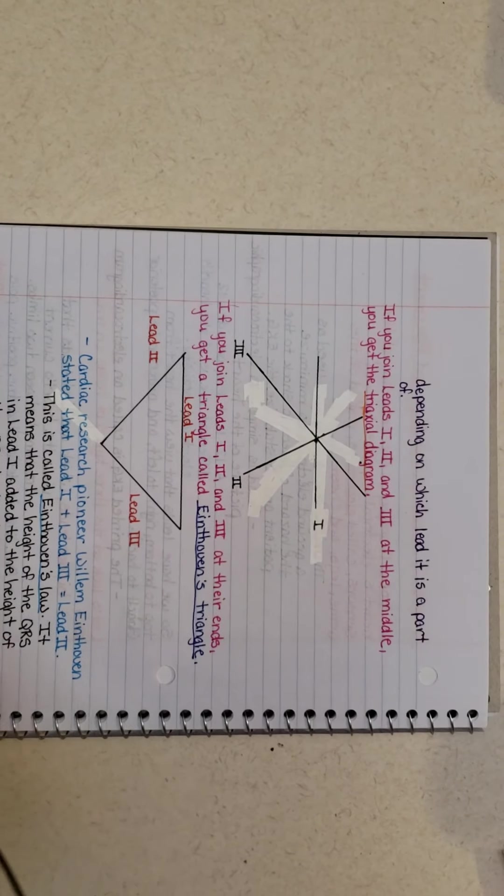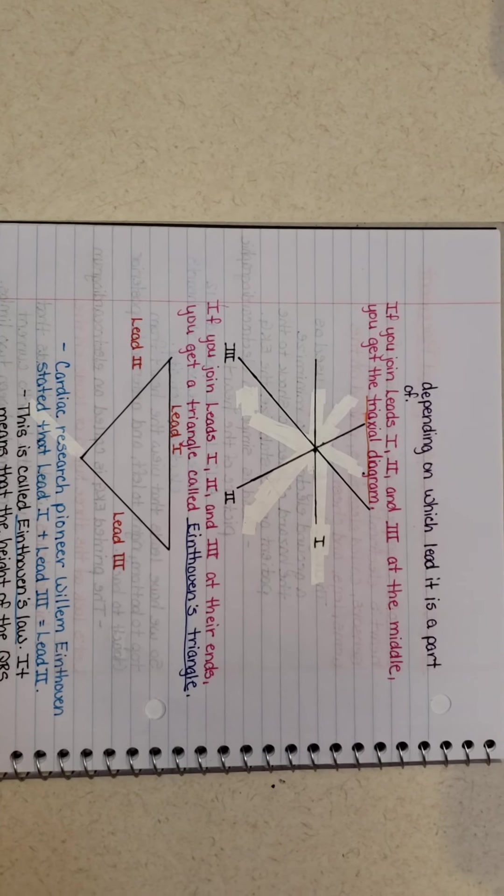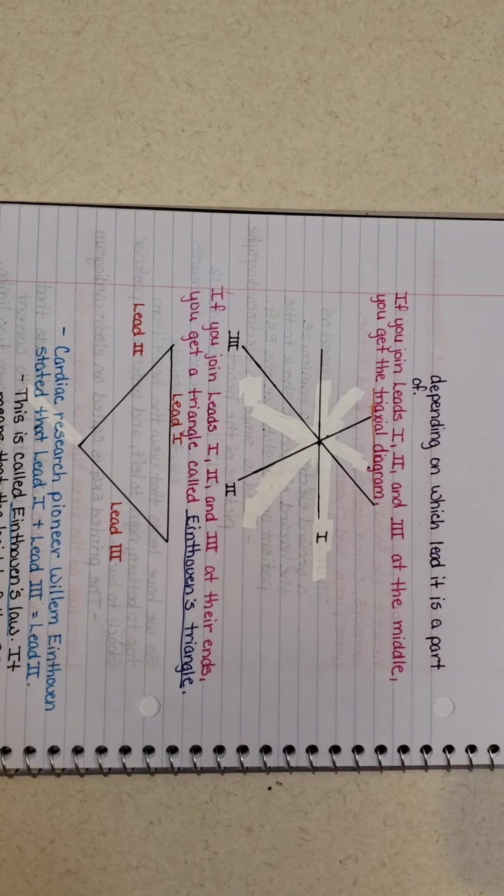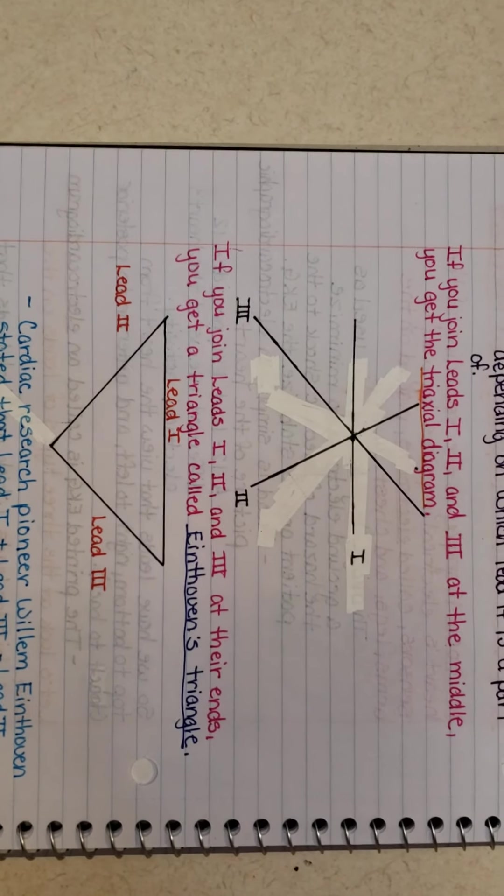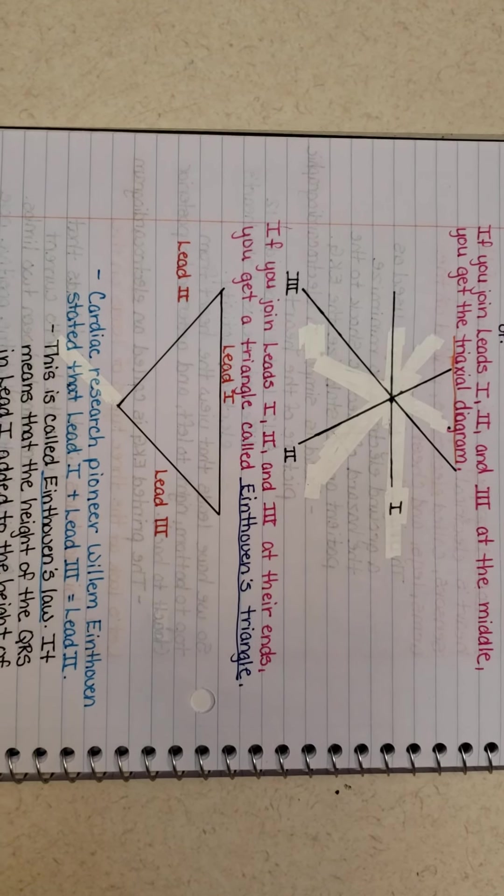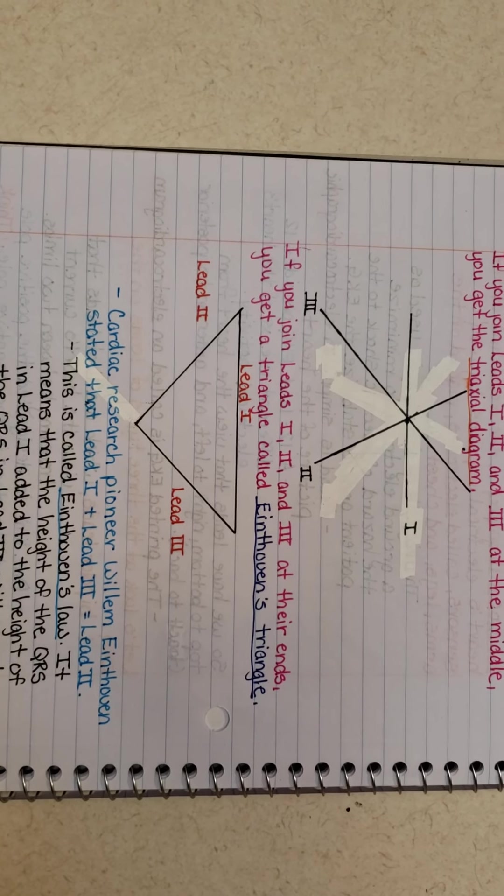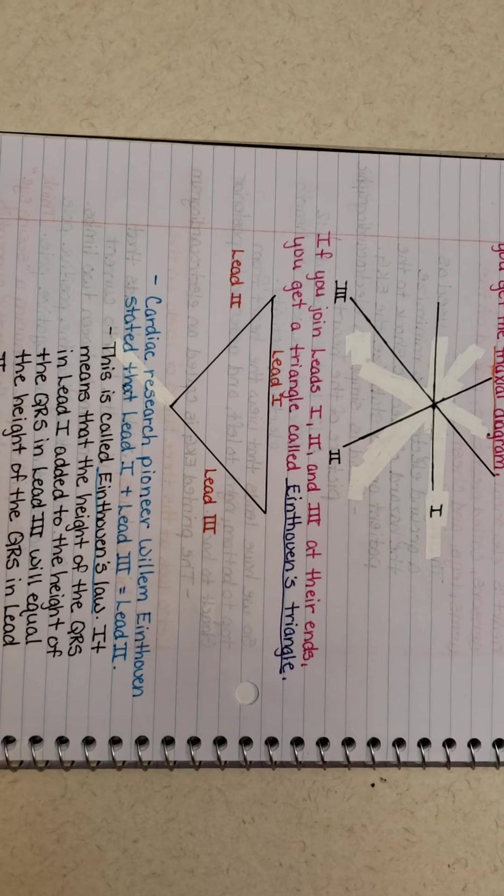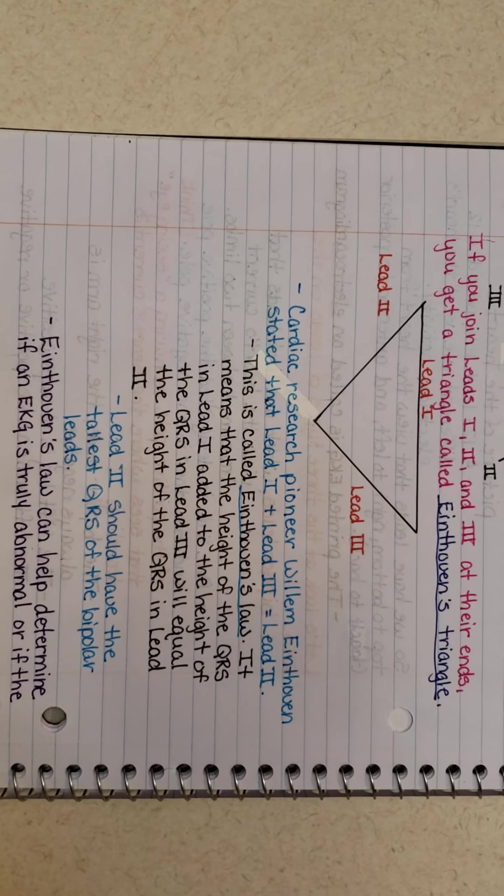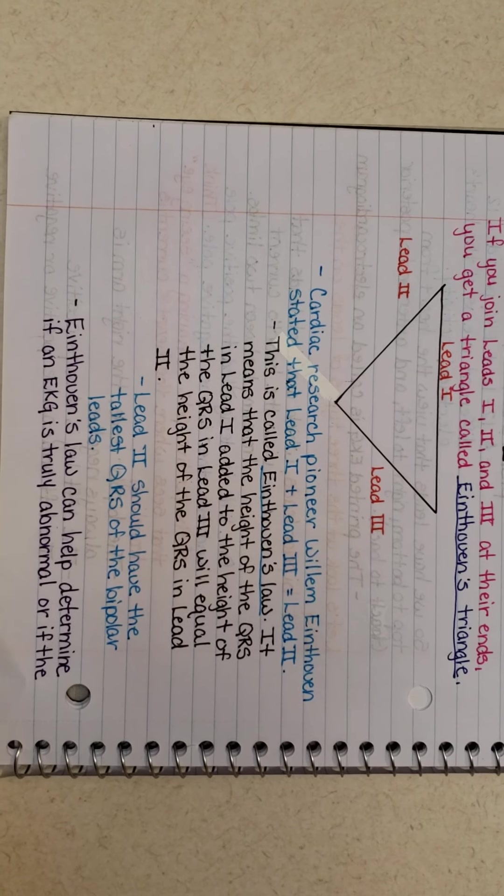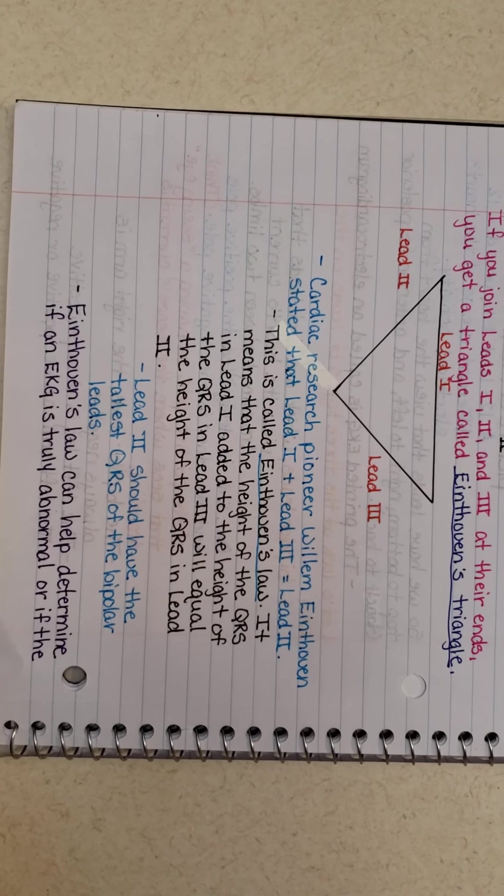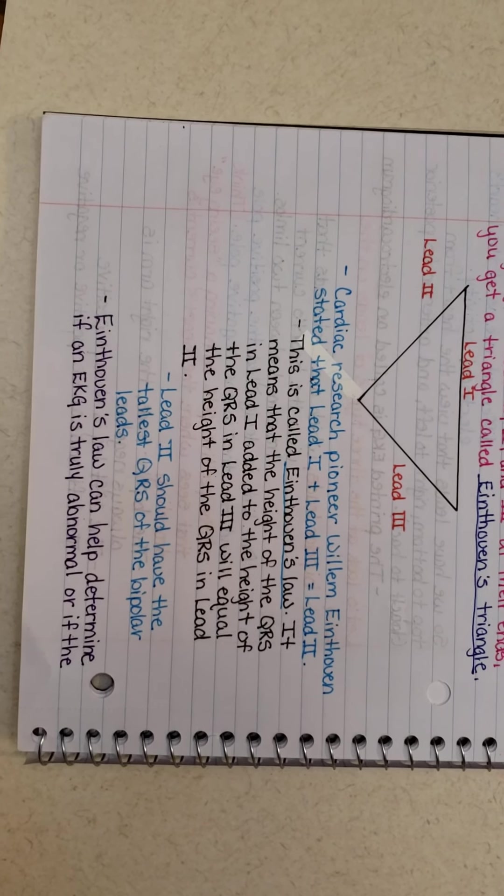If you join leads one, two, and three at the middle, you get what they call the tri-axle diagram, which is here. If you join leads one, two, and three at their ends, you get a triangle, which we call Einthoven's Triangle. This is called Einthoven's Law.